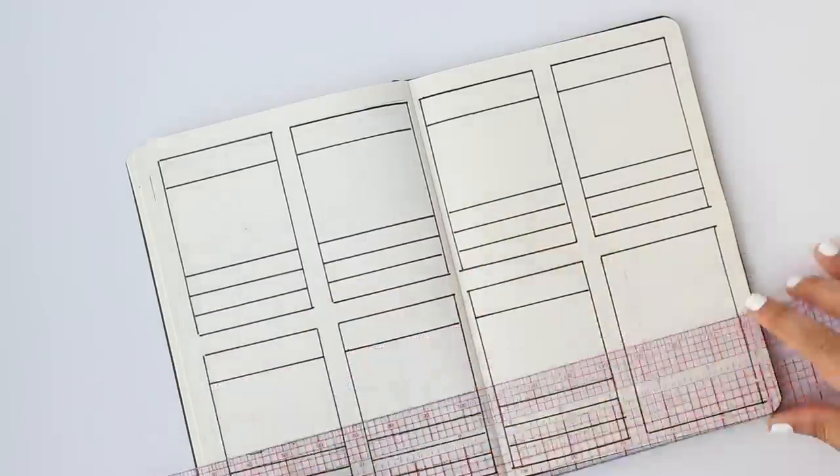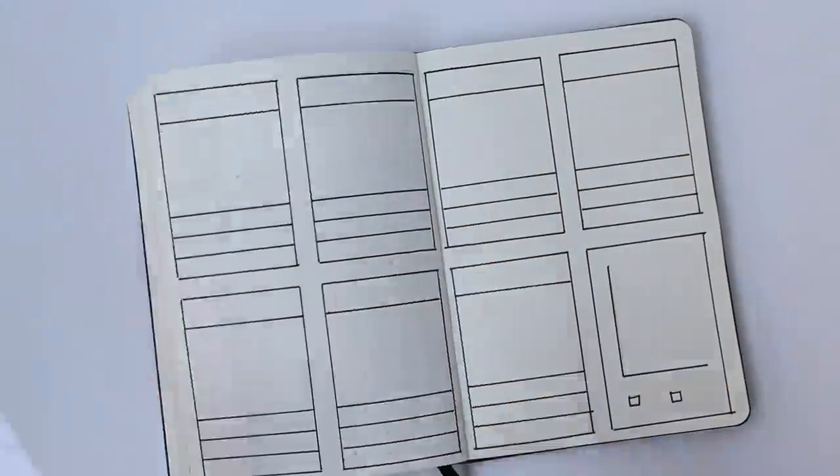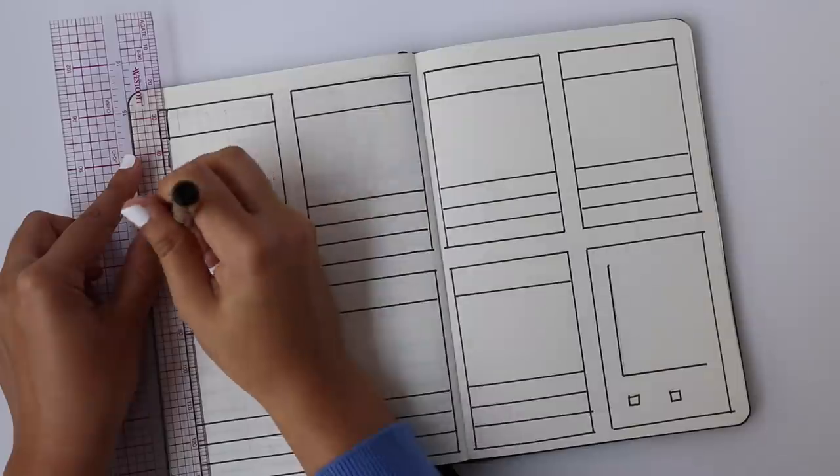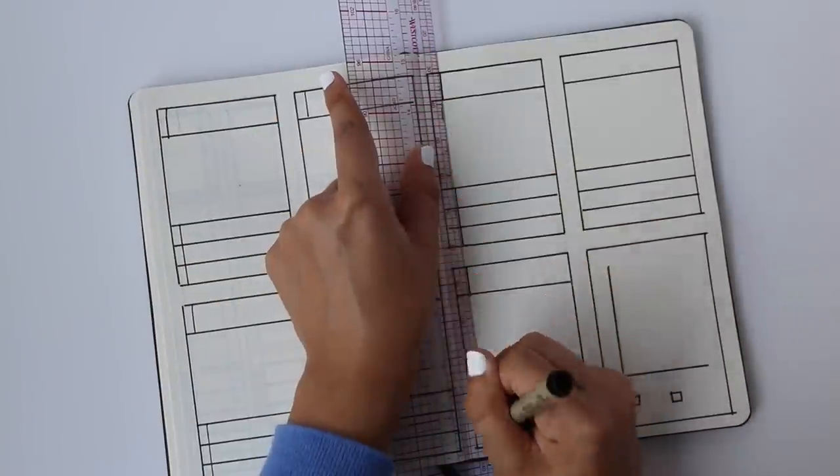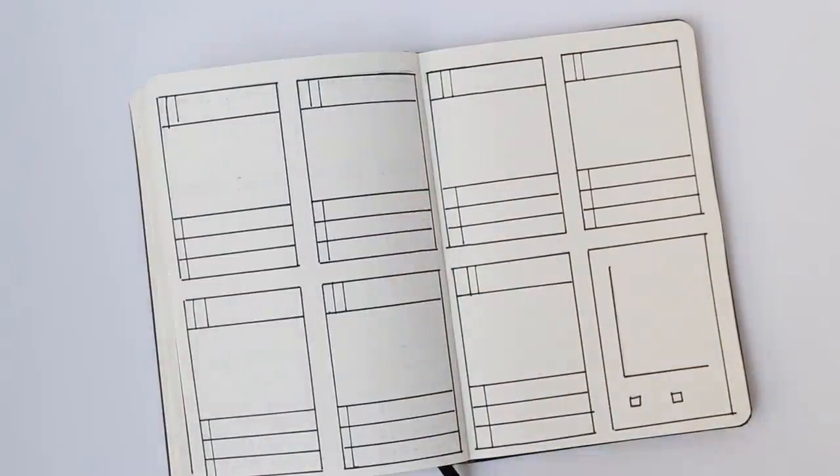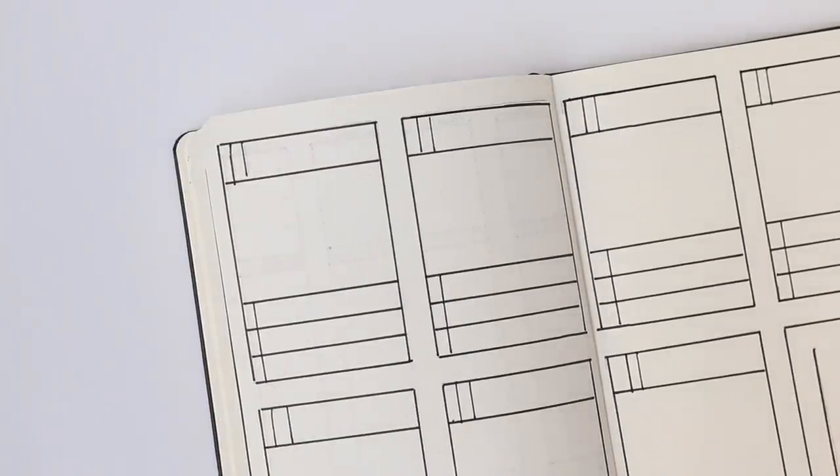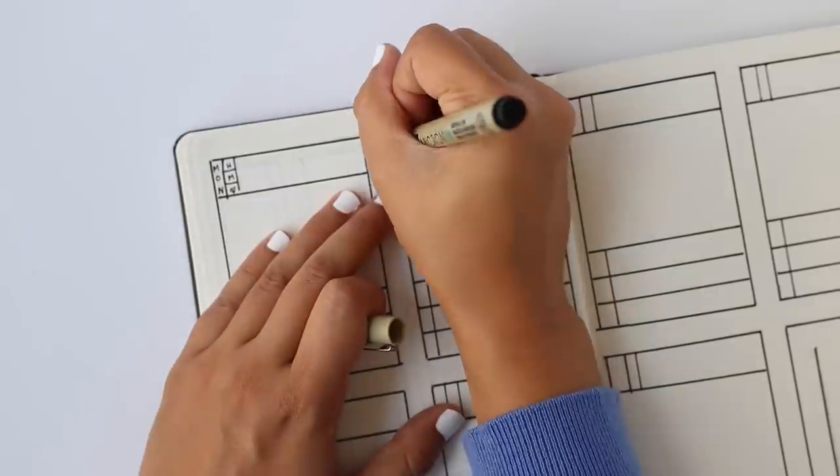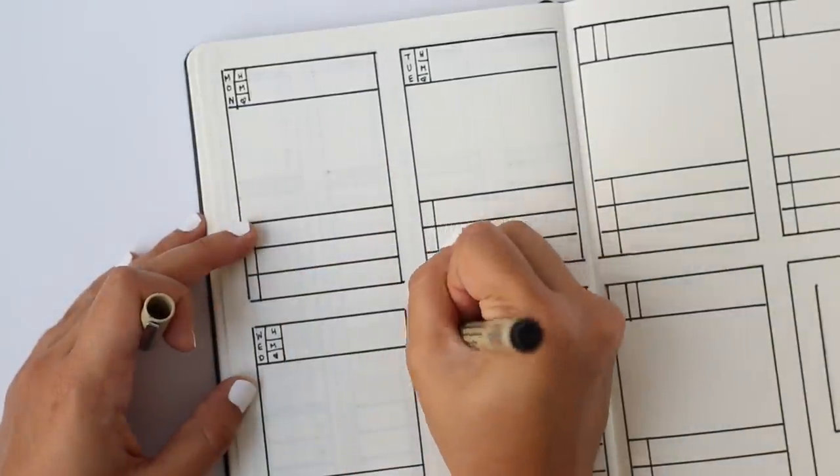I really love both of these weekly spreads because again they do lots of things. They're not just to-do lists, they're not just places to write down tests or assignments that you have due, there are areas where you can keep track of a lot of things all at once and in general it just makes it that much easier to keep up with your bullet journal.